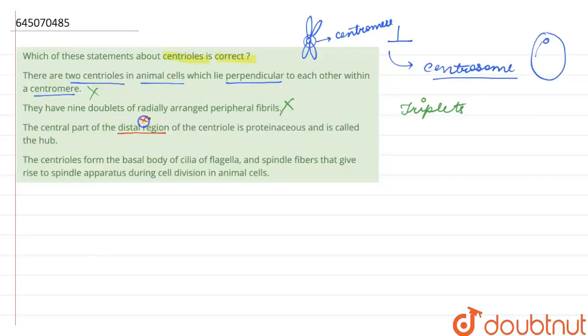Distal region means away from the center, and proximal means towards the center. So the central part is present towards the proximal region of the centriole and is proteinaceous and is called the hub. So this statement is also incorrect.